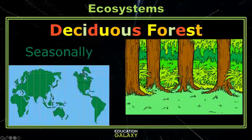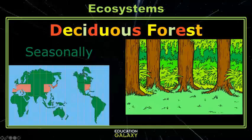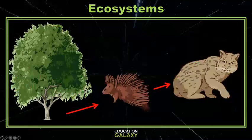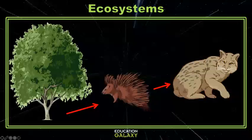Our next ecosystem covers much of the US: the deciduous forest. Deciduous means that a tree loses its leaves seasonally. In a deciduous forest, the temperatures and precipitation change based on the season. The summers here are moderately warm, and the winters are moderately cold. Let's look at a food chain. There are a lot of different producers, but let's pick a deciduous tree like a maple tree. The porcupine eats twigs and bark from the tree, and the bobcat eats the porcupine.